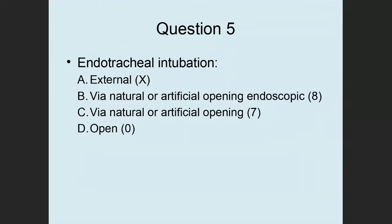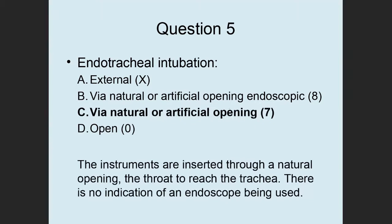Question 5: Endotracheal intubation — is this an external approach, via natural or artificial opening endoscopic, via natural or artificial opening, or open? This is via natural or artificial opening — value 7. The instrument is inserted through a natural opening in the throat to reach the trachea. There's no indication of an endoscope being used, so it can't be 8 — it must be 7.